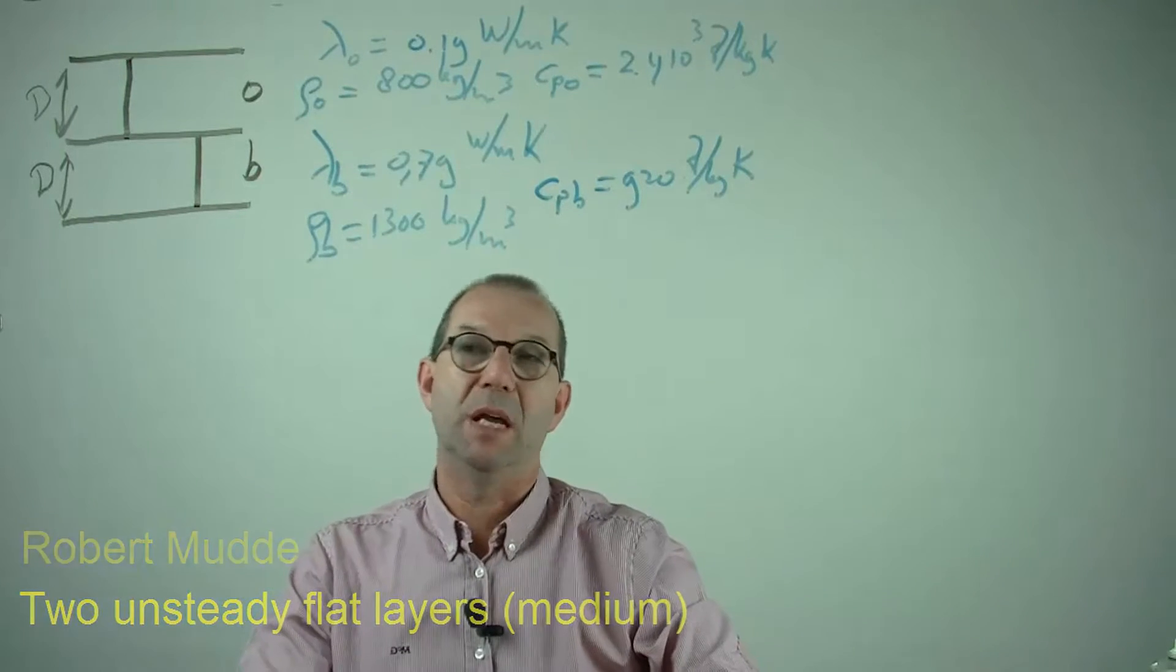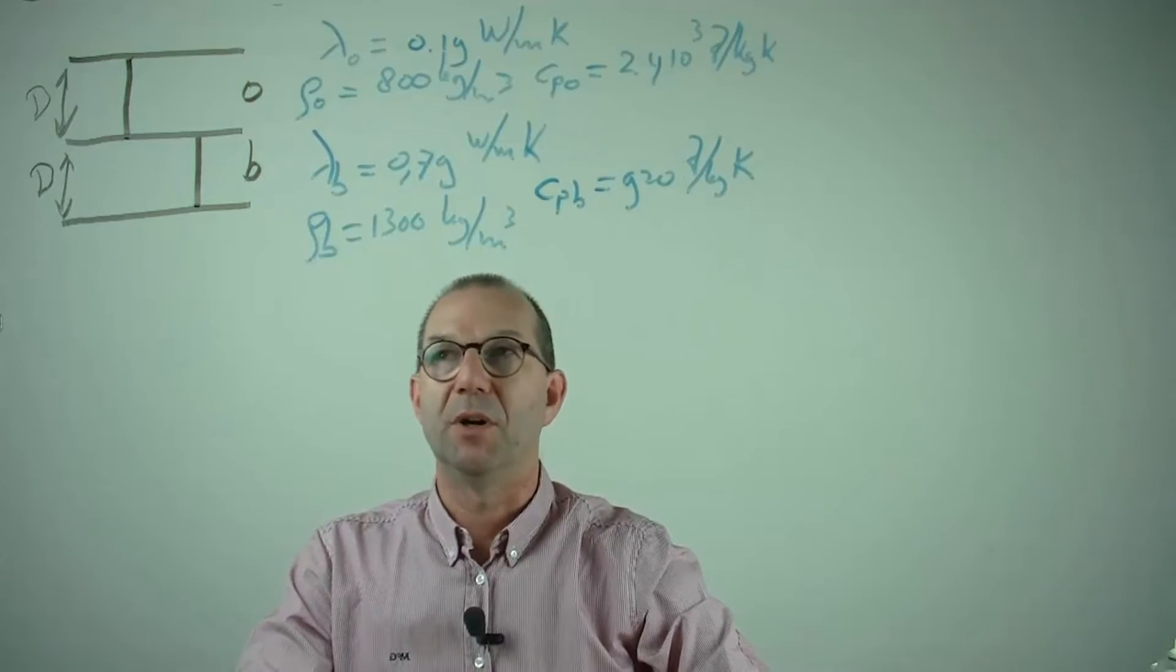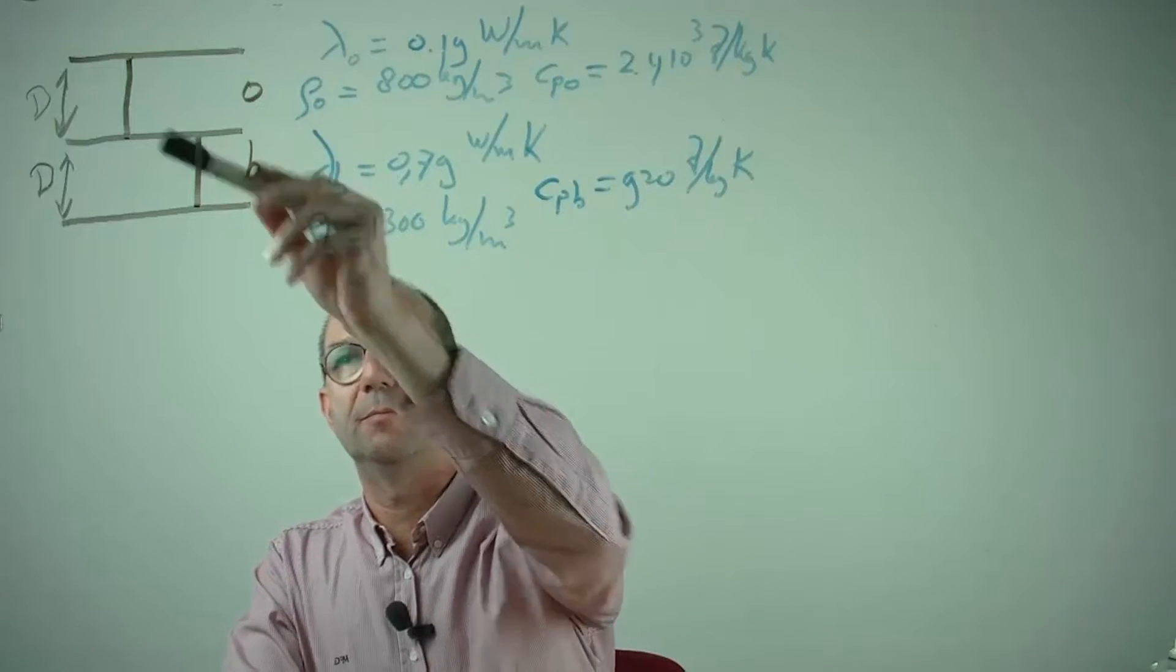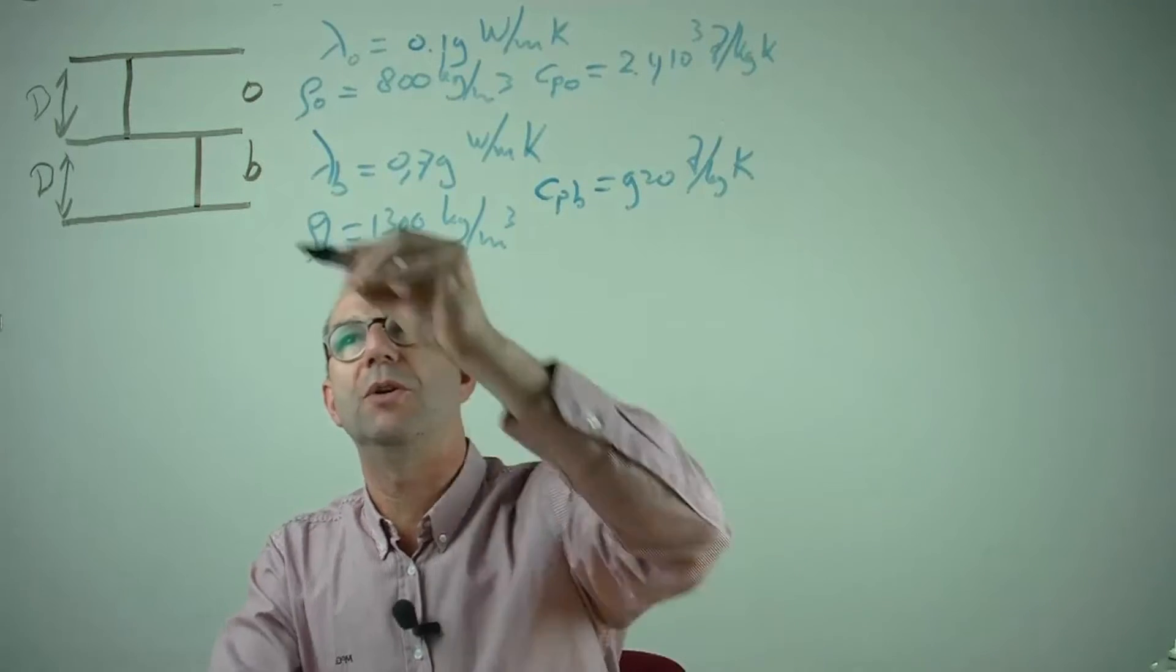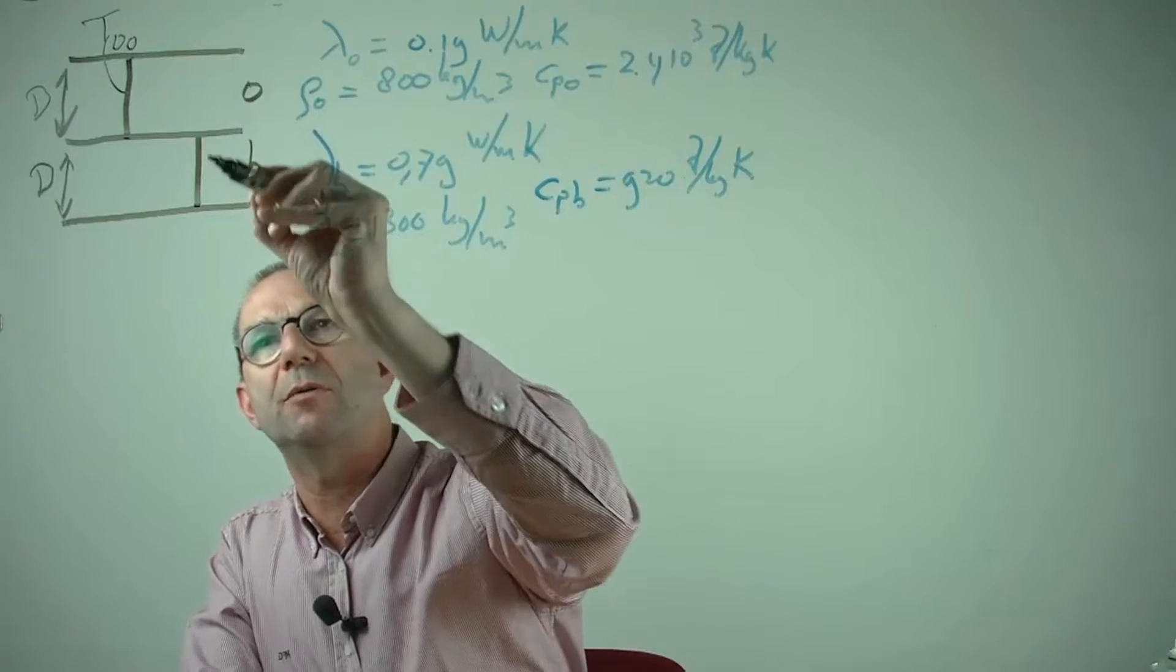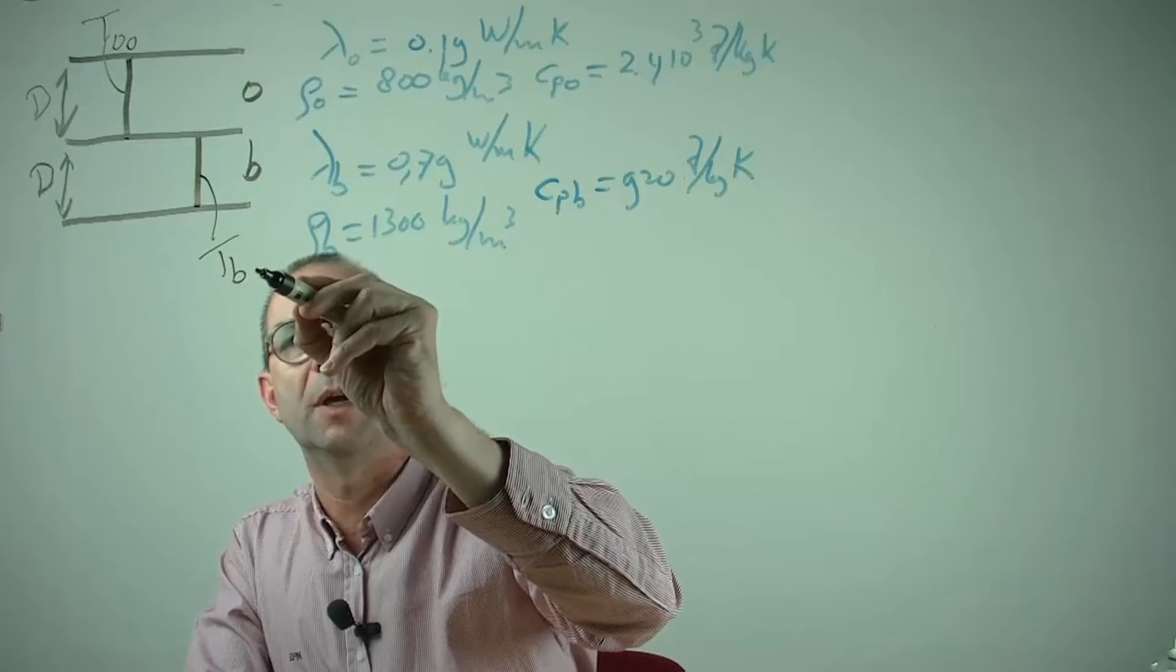A wood one made of oak and another material, a bituminous material, at the bottom. Initially these two have a different temperature. I sketched them here and I call this one the temperature of the oak at time zero and this one the temperature of the bituminous material also at time zero.